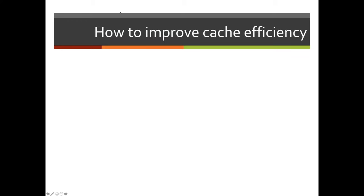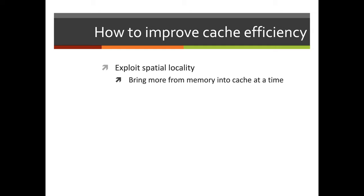Now that we've incorporated how to make use of caches, we will need to explore various mechanisms to make sure that we're using caches in the most efficient manner. There are a few ways to do this. We can exploit the spatial locality of the data we're using — we want to bring more data from memory into our caches at one time. We also want to work on better organization to exploit the working set concept associated with cache.